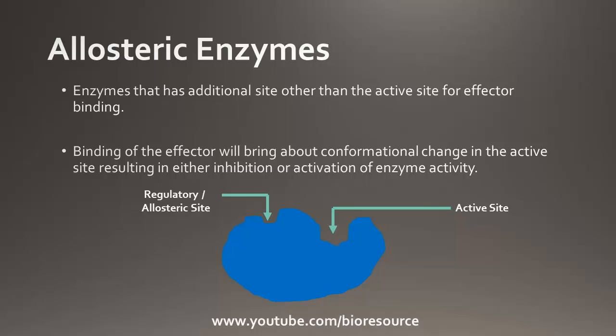The substrate usually binds at the active site of the enzyme. In Allosteric Enzymes, the enzyme has an additional site other than the active site for allosteric ligand binding. The site other than the active site is called the Allosteric site.